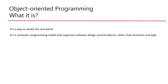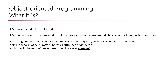The second explanation is: it's a computer programming model that organizes software design around objects rather than functions and logic. The third one is: it's a programming paradigm based on the concept of objects, which can contain data and code — data in the form of fields, and code in the form of procedures, often known as methods. If you're not familiar with object-oriented programming, this doesn't make much sense yet, so we need to explain why we actually need to use it.